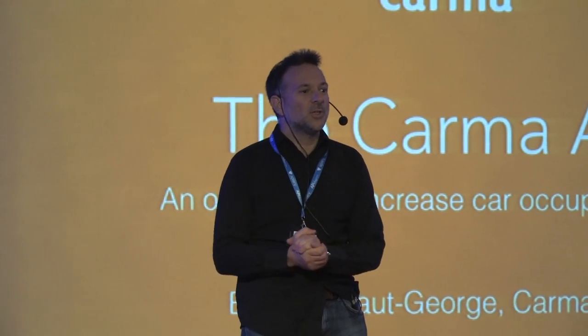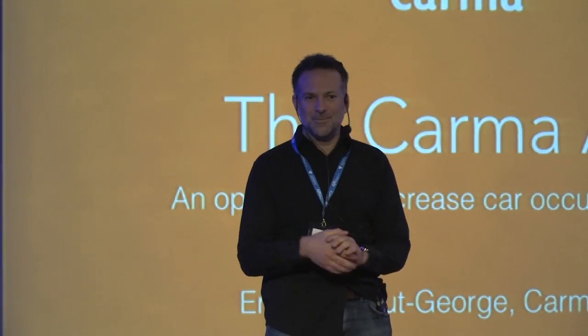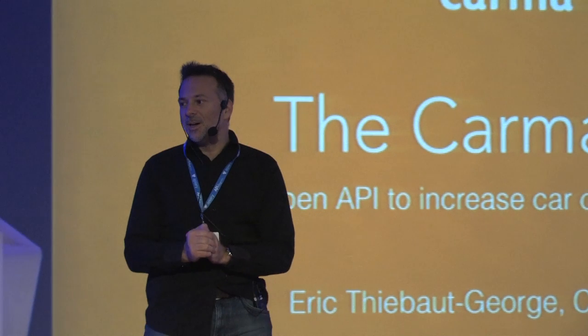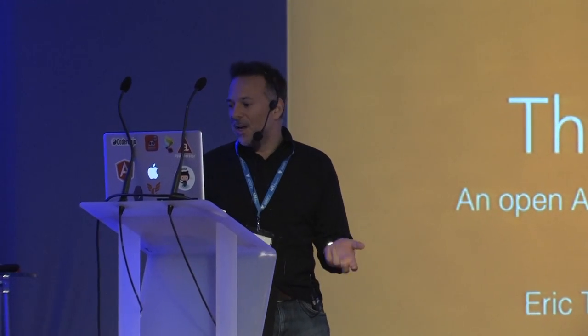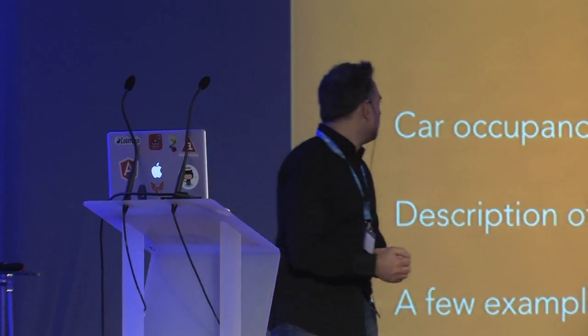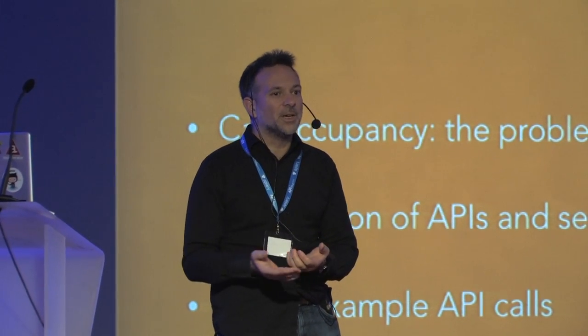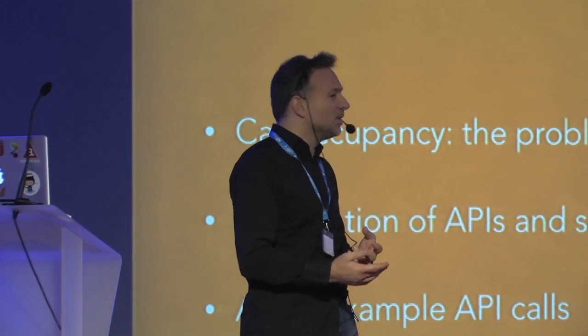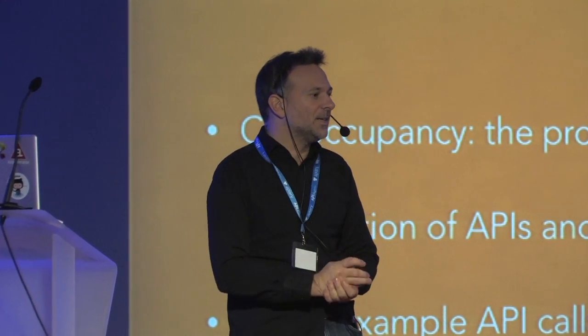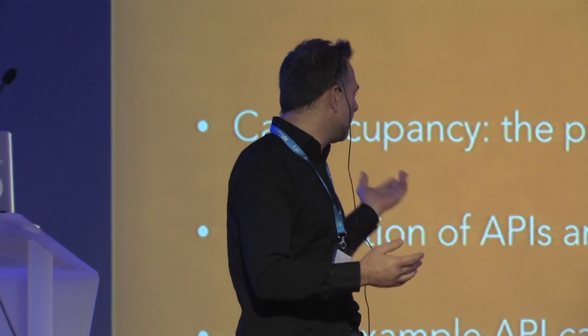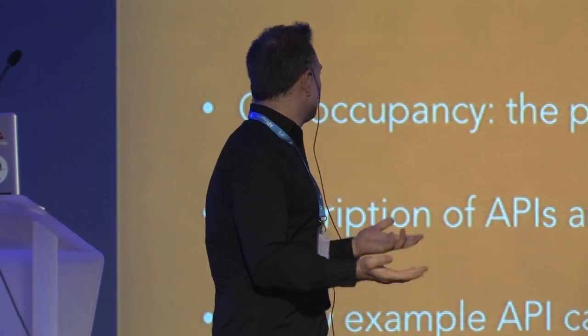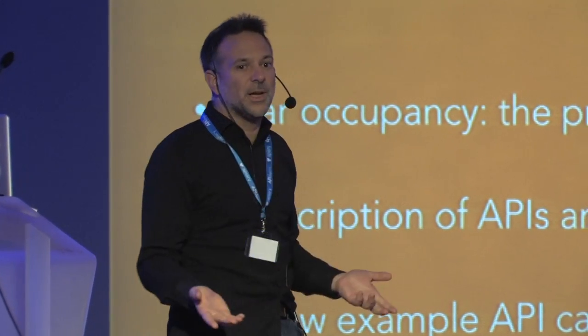I'm going to start by asking you a question: how many of you commute to work using your own car? Not a lot, maybe 10% or so. Basically what I'm going to talk about now is the problem with car occupancy. Most people who commute by car commute on their own, and it clogs up the road. There's a lot of people commuting by car and it takes a lot of room on the road.